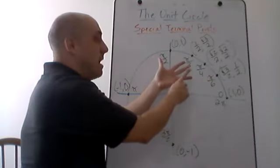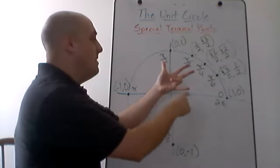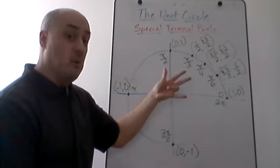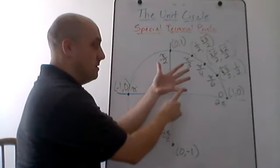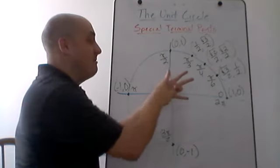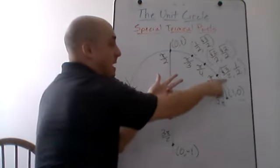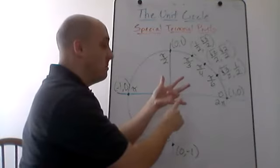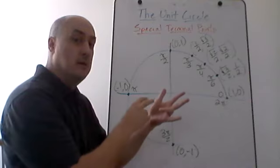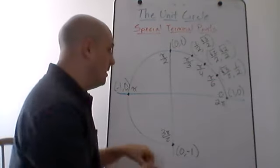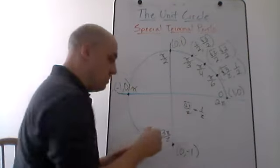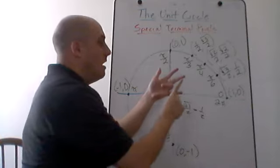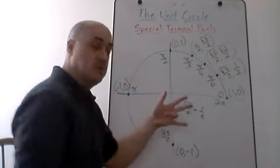Depending on which terminal point you want, you put down the corresponding finger. The number of fingers above the one you put down gives the x-coordinate, and the number below gives the y-coordinate — it's always the square root of that count over 2. For pi over 6, put down the ring finger: 3 fingers above gives x = √3/2, and 1 finger below gives y = √1/2 = 1/2. The square root of 1 over 2 just equals one-half.